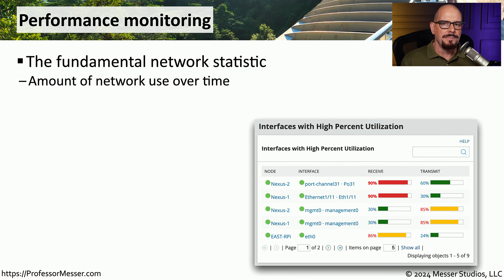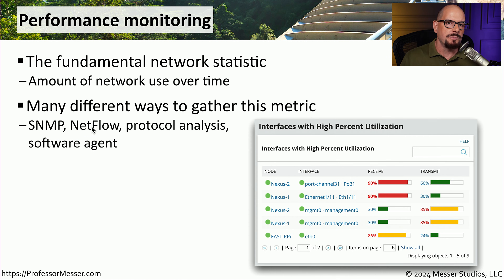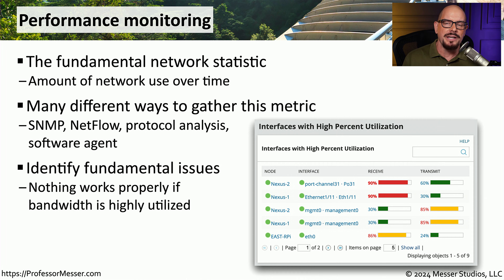If we're troubleshooting a problem, we may be interested in overall performance from a device. This might include network utilization statistics or an overview of any errors that may have occurred. You can usually gather this type of information using SNMP, the Simple Network Management Protocol. Maybe you're gathering NetFlow statistics, doing protocol analysis at the frame level, or maybe there's a software agent running on that device providing a summary of performance information. Based on these statistics, we can understand if our network is highly utilized, if we're seeing a large number of errors, and identify where the problems may be occurring.